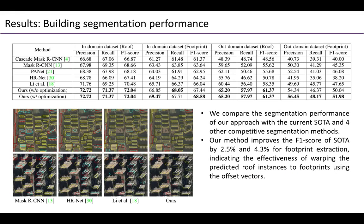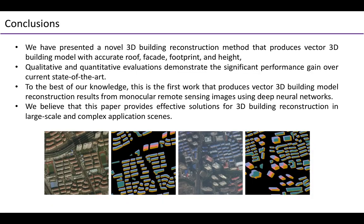For building segmentation evaluation, we compare the roof and footprint segmentation performance of our method with the current state-of-the-art and several other competitive segmentation methods. Our method improves the F1 scores by 2.5 and 4.3% for footprint extraction, indicating the effectiveness of warping the predicted roof instances to footprints using offset vectors.